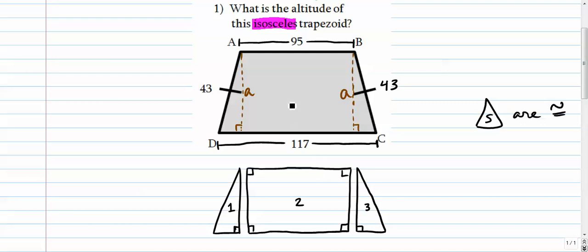So the altitude remains, it's right here, it's also right here, it's right here, it's right here. It's that vertical distance from base to base at a 90 degree angle.